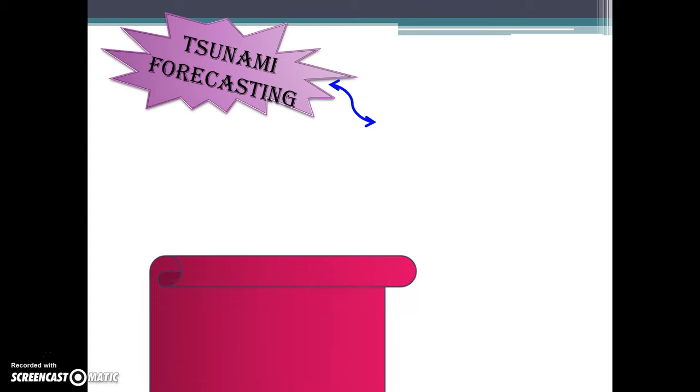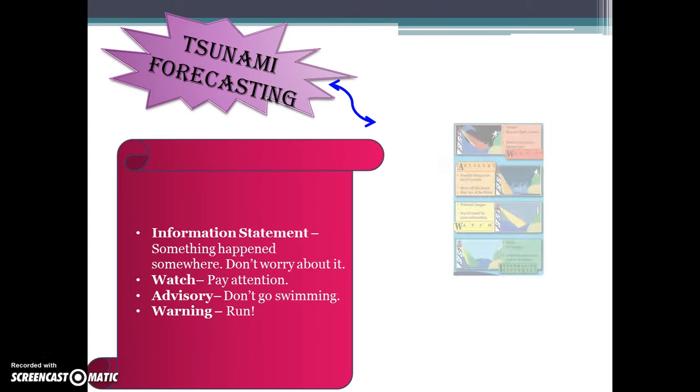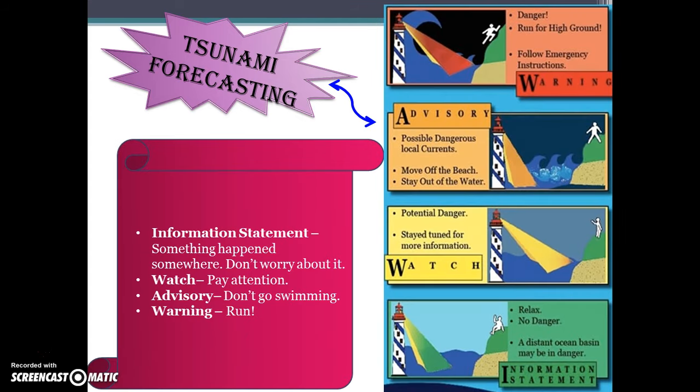Tsunami forecasting. Tsunami forecasting provides levels of information: an information statement meaning something happened somewhere but don't worry; a watch meaning pay attention; and a warning meaning don't go swimming — run.